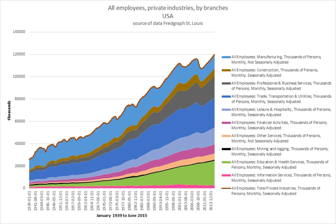A wage laborer is a person whose primary means of income is from the selling of his or her labor in this way. In modern mixed economies such as that of the OECD countries, it is currently the dominant form of work arrangement. Although most work occurs following this structure, the wage work arrangements of CEOs, professional employees, and professional contract workers are sometimes conflated with class assignments, so that 'wage labor' is considered to apply only to unskilled, semi-skilled or manual labor.